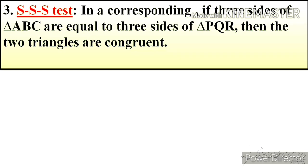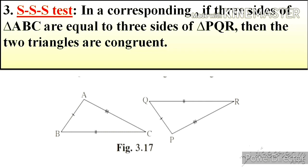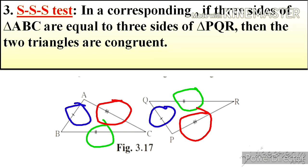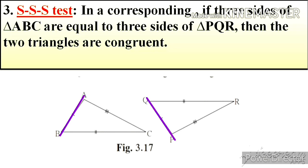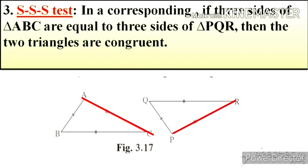Third test is SSS test. If three sides of triangle ABC are equal to three sides of triangle PQR, then the two triangles are congruent. In the given figure, side AB is congruent to side QP, side BC is congruent to side QR, and side AC is congruent to side PR. This property is called Side Side Side test, in short SSS test.